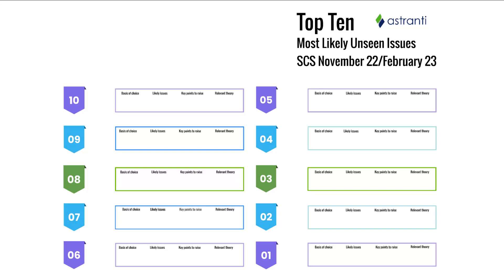We generally have seen around about seven to eight out of our 10 issues appear in every single variant. Before we begin going through the top 10 most likely unseen issues, we'll give a bit of background into where these issues have come from, and also how you can use these issues to prepare for the unseen exam.